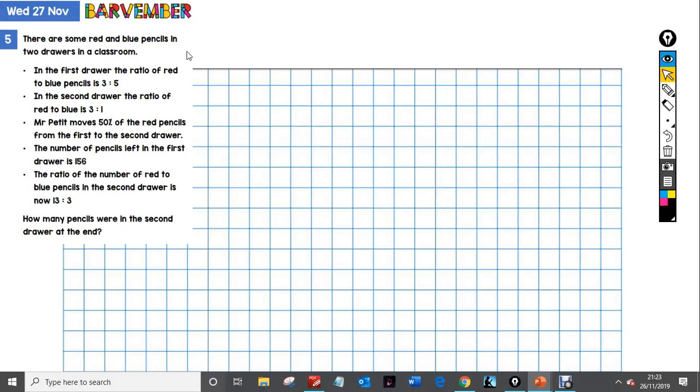There are some red and blue pencils in two drawers in a classroom. In the first drawer, the ratio of red to blue pencils is 3 to 5. In the second drawer, the ratio of red to blue is 3 to 1. Mr. Pettit moves 50% of the red pencils from the first to the second drawer. The number of pencils left in the first drawer is 156. The ratio of the number of red to blue pencils in the second drawer is now 13 to 3. How many pencils were in the second drawer at the end?